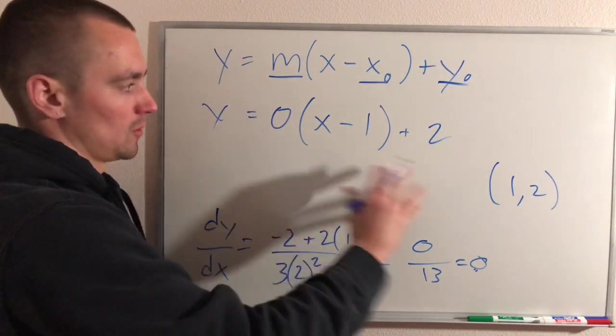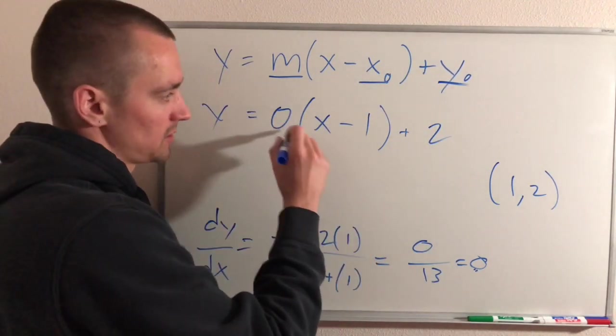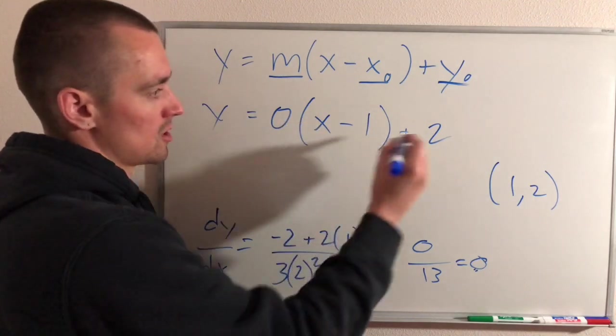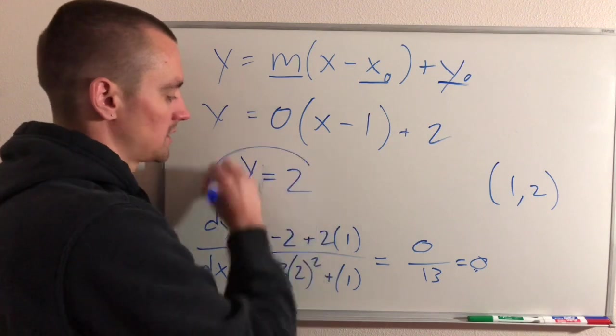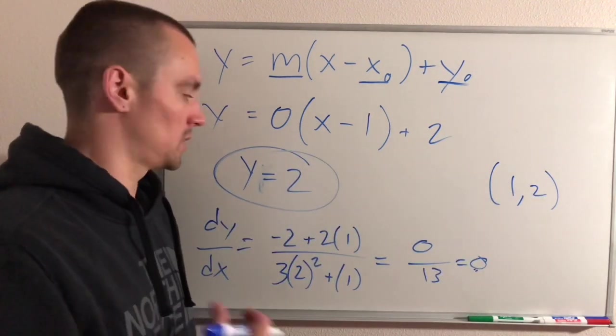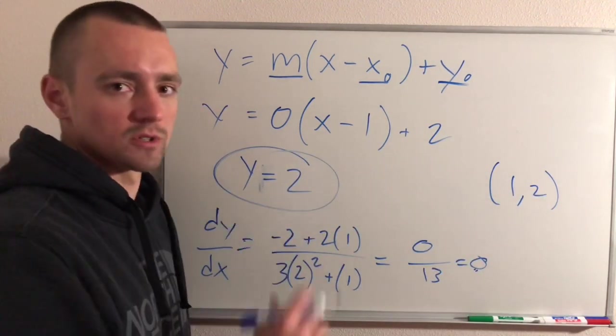So our tangent line is going to look like this. To simplify, 0 times (x - 1) is just 0, plus 2 is going to be 2. So our tangent line that goes through that point is actually going to just be the constant function y = 2.